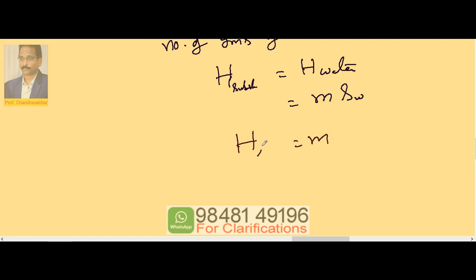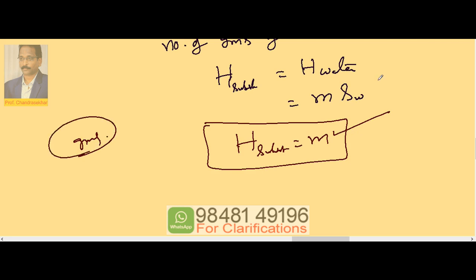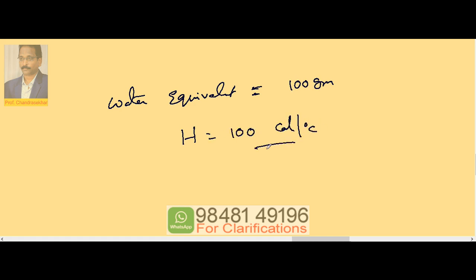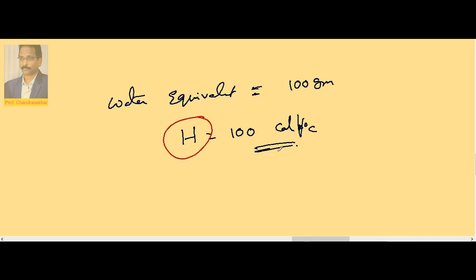Since S of water equals 1 in CGS, H of water equals M — just the number of grams. So the heat capacity of the substance equals the number of grams of water with the same heat capacity. We use grams here because in CGS the specific heat of water is 1, making the calculation direct. For example, if a substance has a water equivalent of 100 grams, that means its heat capacity H equals 100 calorie per degree centigrade.